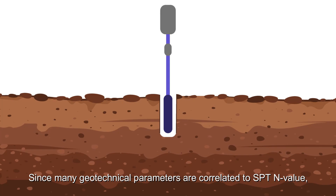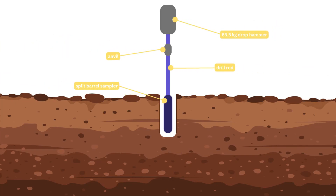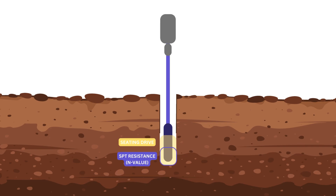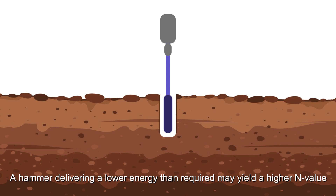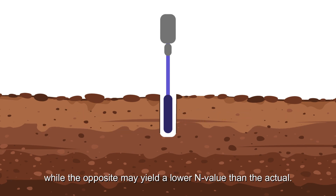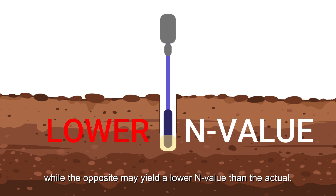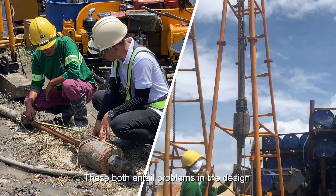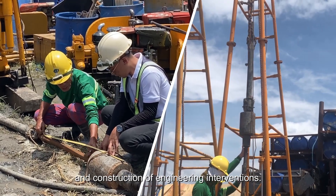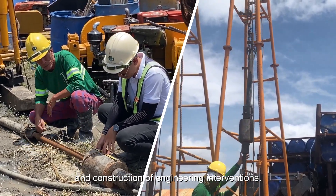Since many geotechnical parameters are correlated to SPT N-value, every blow must impart a consistent energy to the soil being tested. A hammer delivering a lower energy than required may yield a higher N-value, while the opposite may yield a lower N-value than the actual. These both entail problems in the design and construction of engineering interventions.